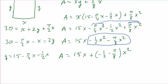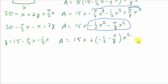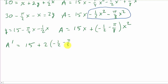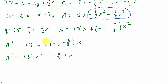Now let's take the derivative. The derivative A′ equals 15, and bringing the exponent down on the X² term gives 2 times (negative one-half minus π over 8) times X. That simplifies to A′ equals 15 plus (negative 1 minus π over 4) times X.